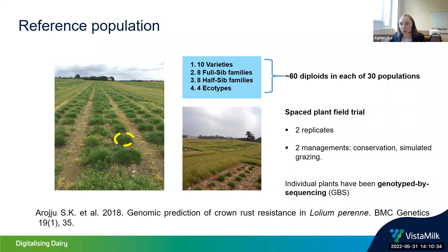The individual plants were genotyped by sequencing. In the field there were 10 varieties, eight full-sib families, eight half-sib families, and four ecotypes. The individual grass clumps you can see in the picture are individual genotypes, and each has been observed, analyzed, and scored according to the different criteria used. For each genotype we also have genotyping-by-sequencing profiles from the DNA.